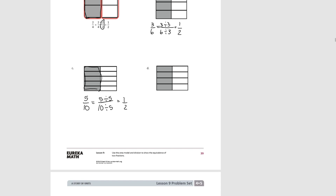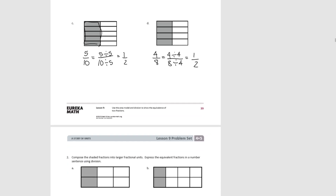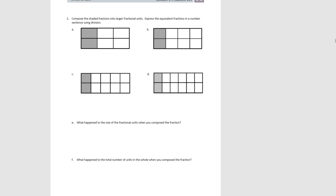Try D. In D we started with eight total units and four of them were shaded. To end up with one half, we're going to divide the numerator by four and the denominator by four, to end up with two total units and one of them shaded. For number two, it says to compose the shaded fractions into larger fractional units and then express the equivalent fractions in a number sentence using division.